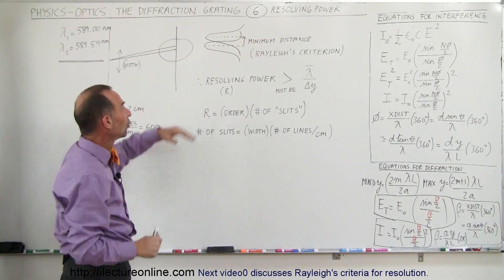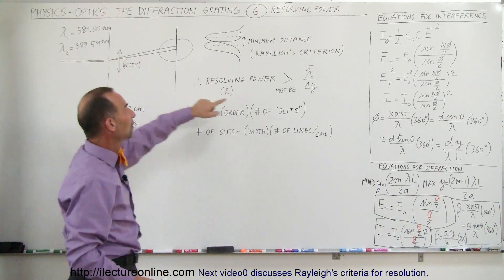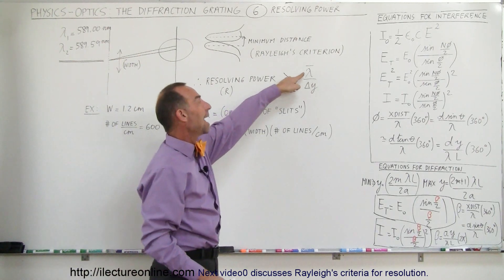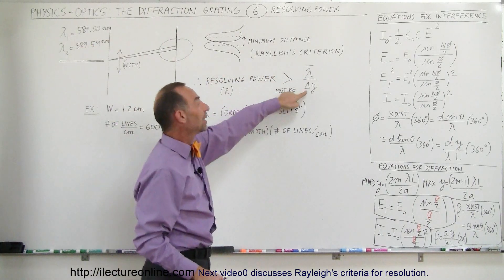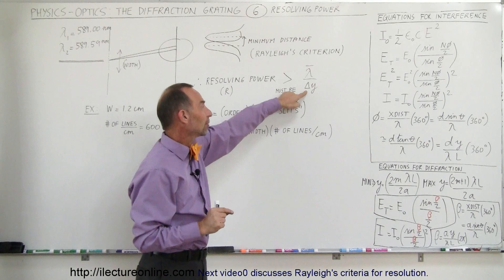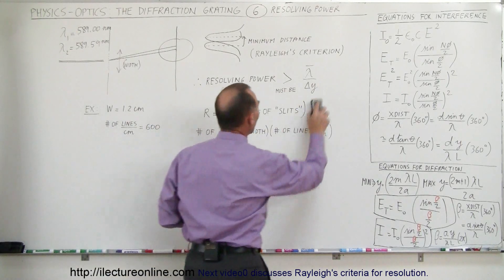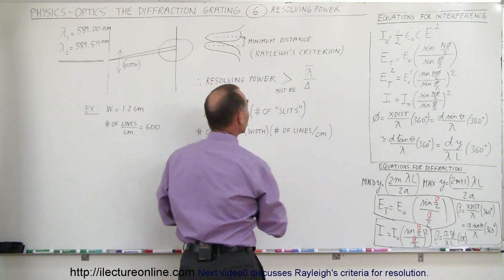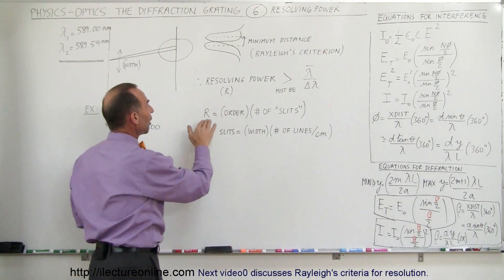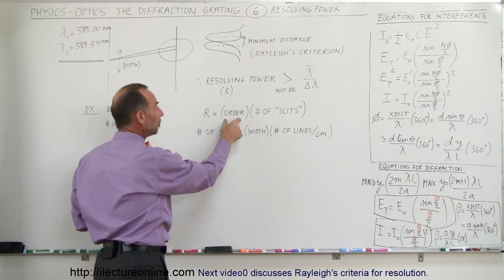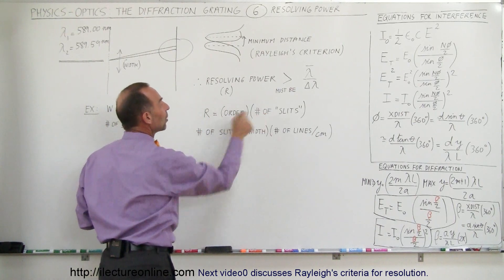In order for that to happen, the resolving power of the diffraction grating must be greater than the average value of the wavelength of the two waves divided by the difference in wavelength, delta lambda. The resolving power R is equal to the order — first, second, or third — times the number of slits N.